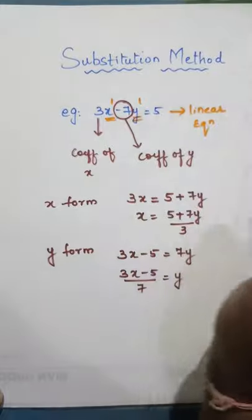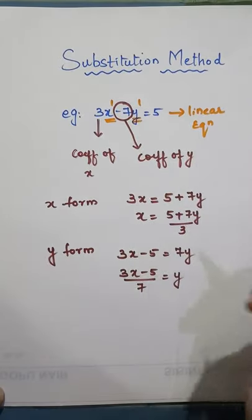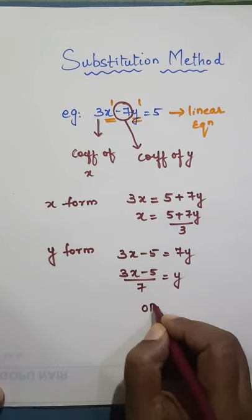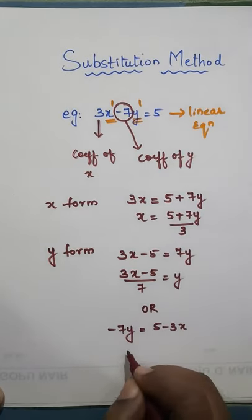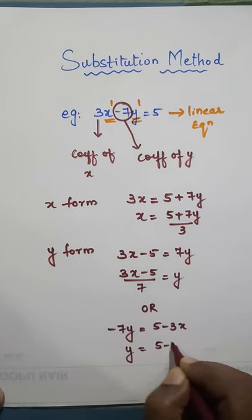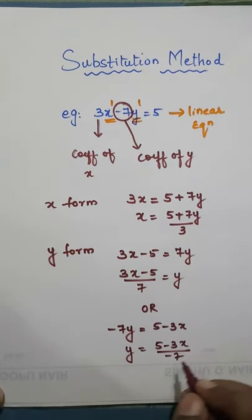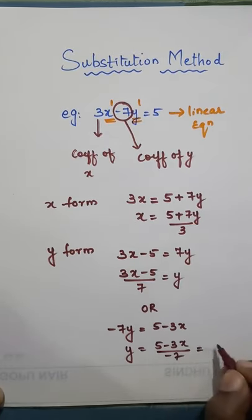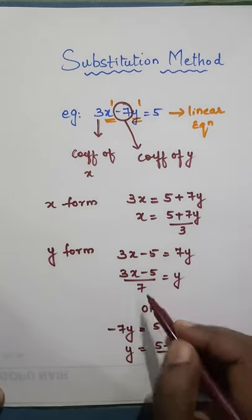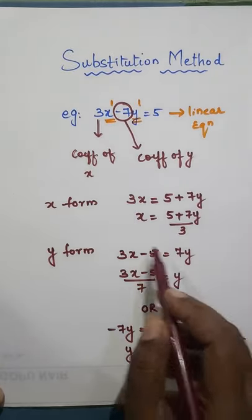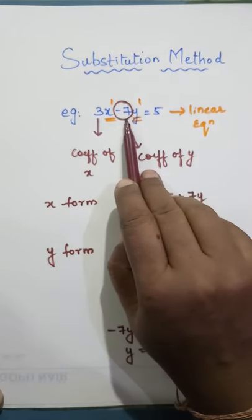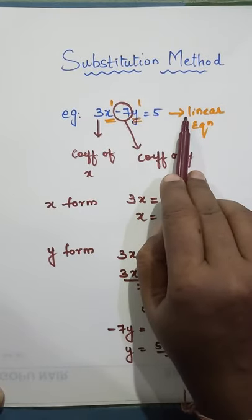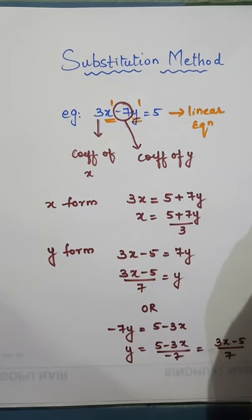If you want to keep 7y in RHS only, then you can do this way also. Minus 7y equal to 5 minus 3x. So y equal to 5 minus 3x upon minus 7. Now we don't keep denominator to be negative, so this sign has to be taken up. So it will become 3x minus 5 upon 7. This is the easiest way. I always suggest to students to do it this way. Whenever the variable's coefficient is negative, take that variable to the other side so that it automatically becomes positive.